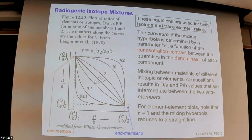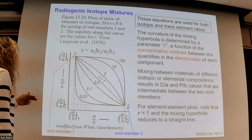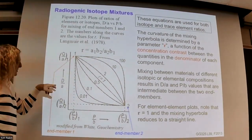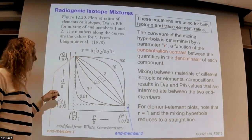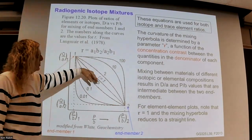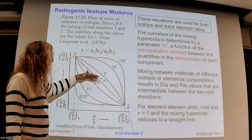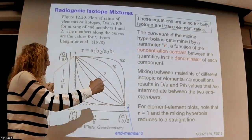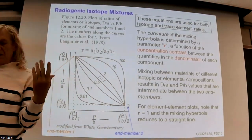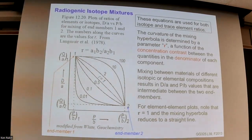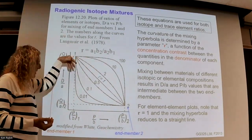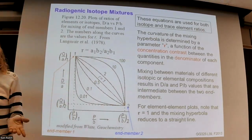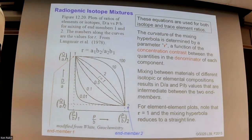It's important to remember that when looking at mixing diagrams, the concentration of the element in the numerator doesn't matter for the shape of the curve — only the concentrations of the denominator elements matter. When r is greater than one, we have an inflection toward one side; when less than one, toward the other side, getting more extreme as we go. So when you plot data — trace element ratios or isotope ratios — if we see an array that looks qualitatively like one of these curves, we can hypothesize that mixing is happening.